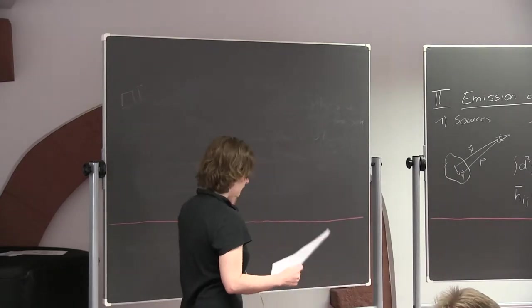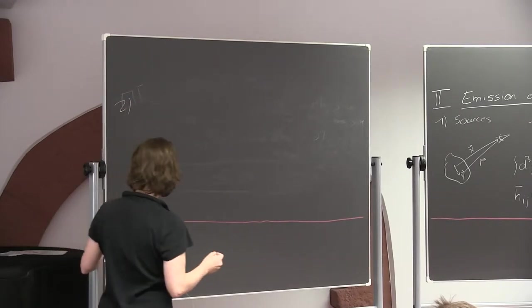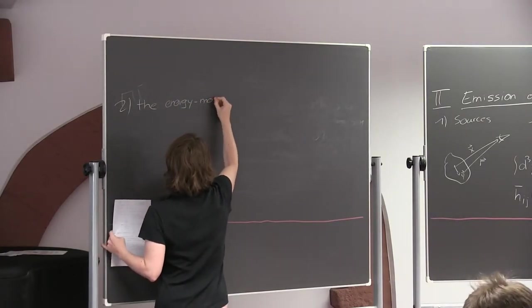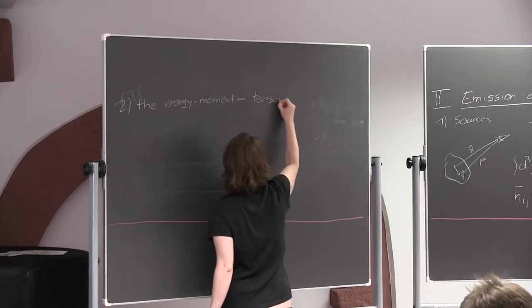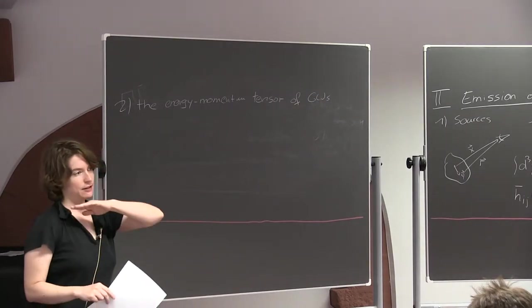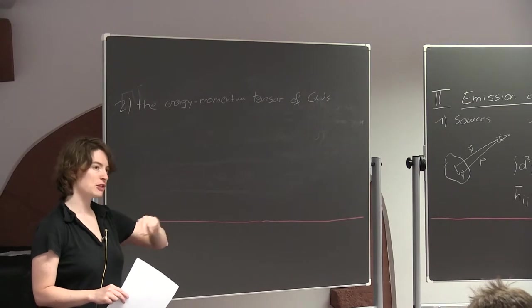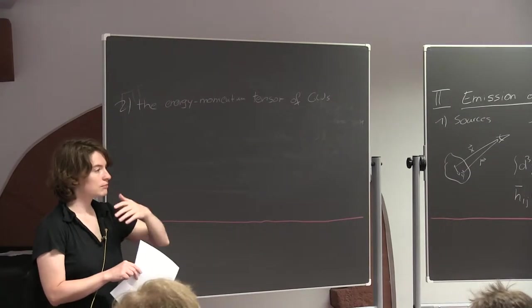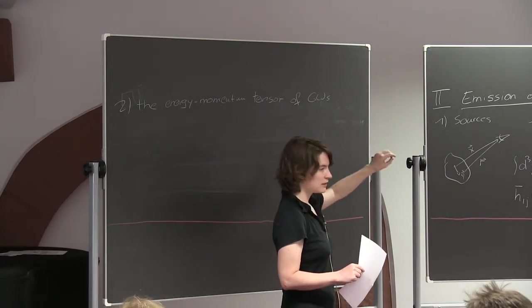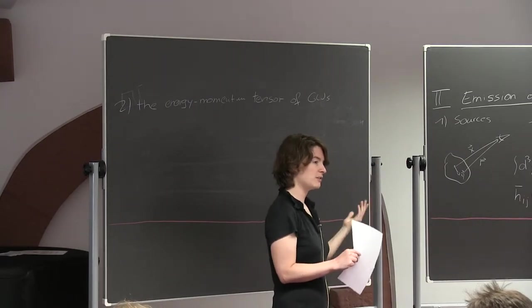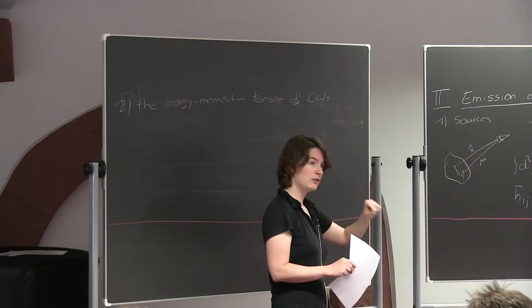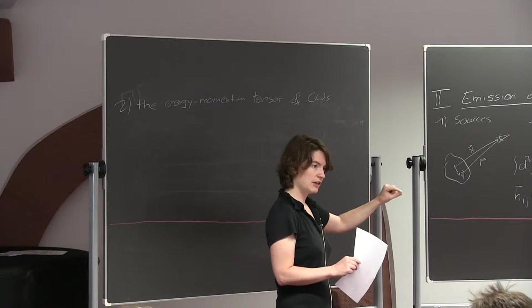Now we come to the energy-momentum tensor of gravitational waves. The problem is that so far we've taken a flat background metric — Minkowski — and looked at a small perturbation. We've computed what the wave equation looks like and how it propagates. But this gravitational wave carries some energy. If it carries energy, it will have some energy-momentum tensor. If it has an energy-momentum tensor and you plug that into Einstein's equations, it tells you your metric is no longer flat.